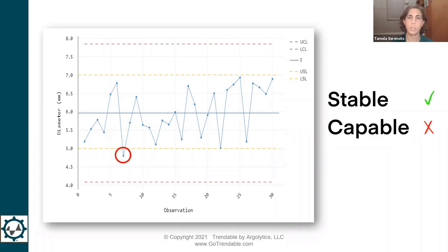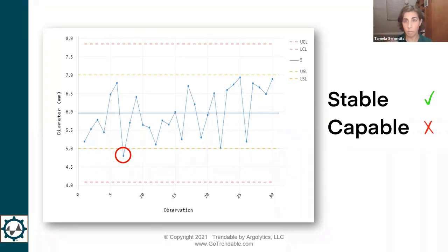Let's say we go back, make some adjustments, collect measurements on 15 new pipe diameters, and plot those on our control chart. We no longer have any points outside the red control limits — the process is stable. However, the control limits are still wider than the customer specification limits, so we could expect many points to go outside the customer specs. The natural variation, as indicated by the width of the red control limits, is wider than the specs. We might be stable, but we are not capable.